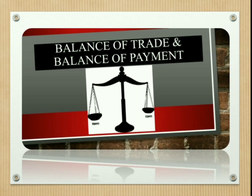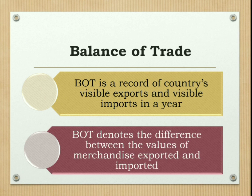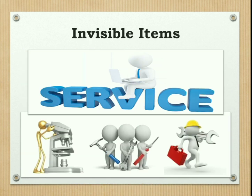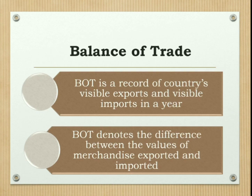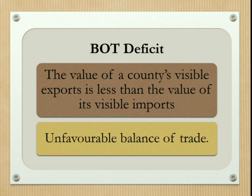International trade has two dimensions: export and import. Balance of trade denotes the difference between the values of merchandise exported and imported. Visible or merchandise items are commodities, while invisible items are services. Balance of trade is a record of a country's visible exports and visible imports in a year. If a country's visible exports are greater than its visible imports, it has a trade surplus — a favorable balance of trade. If visible exports are less than visible imports, it has a trade deficit — an unfavorable balance of trade.